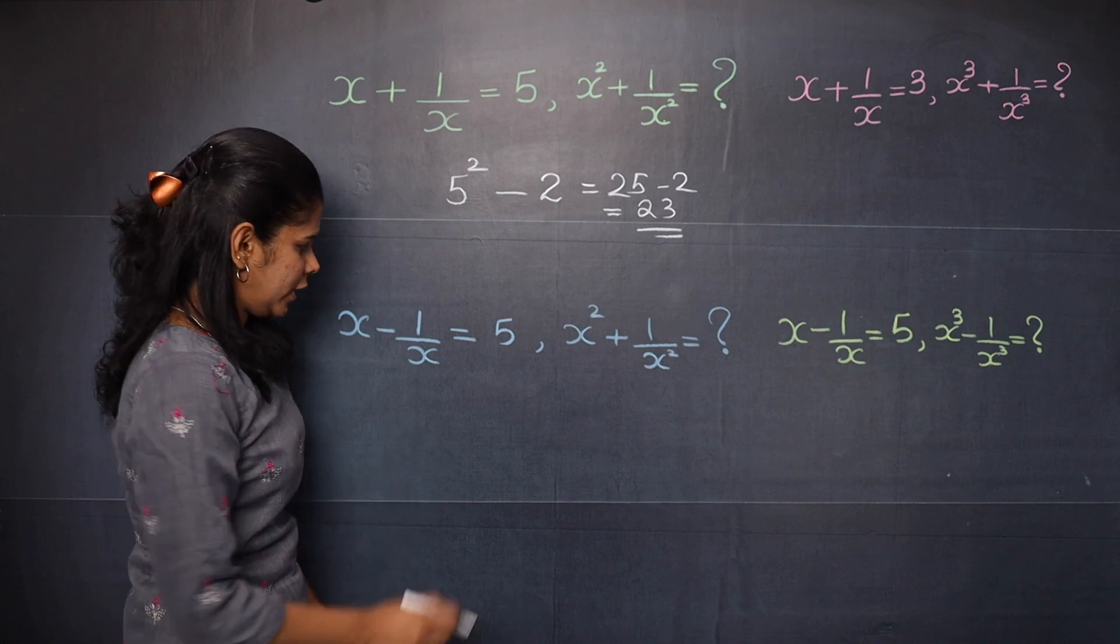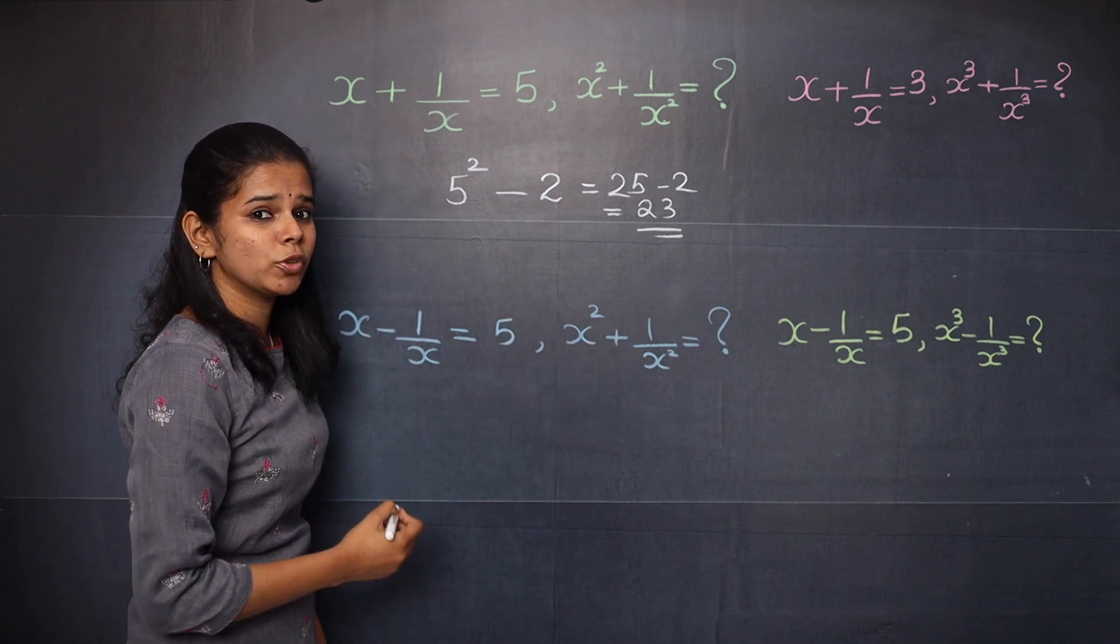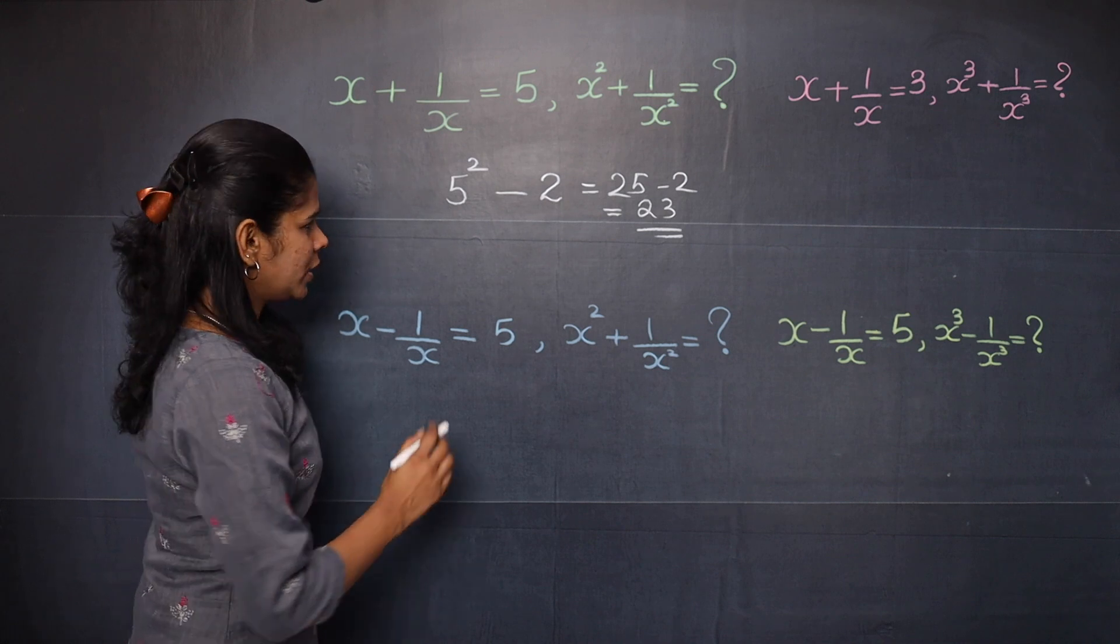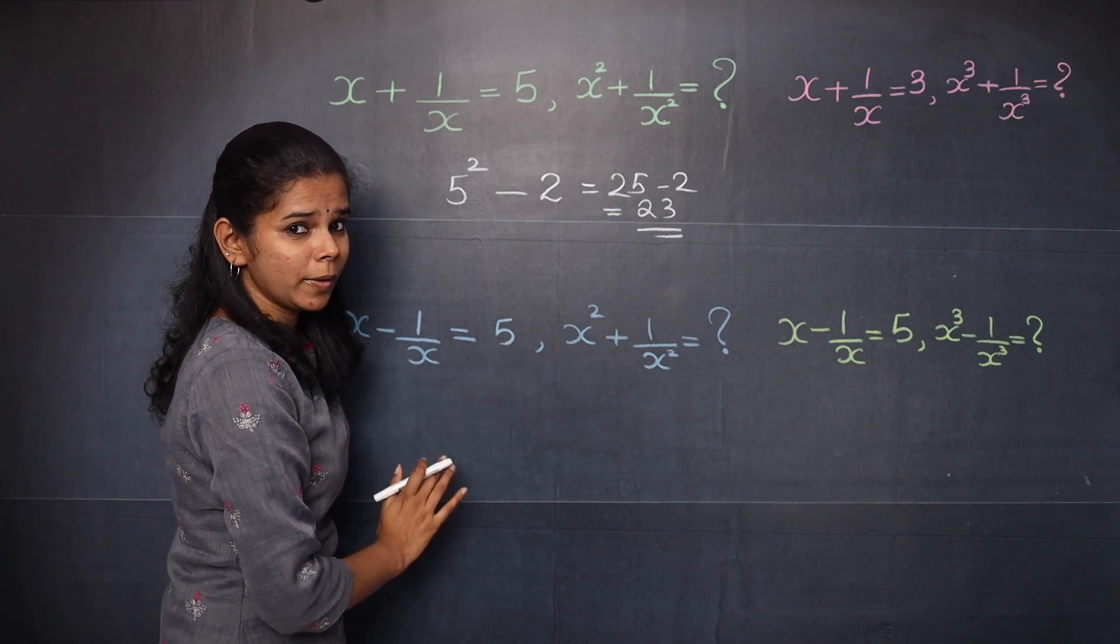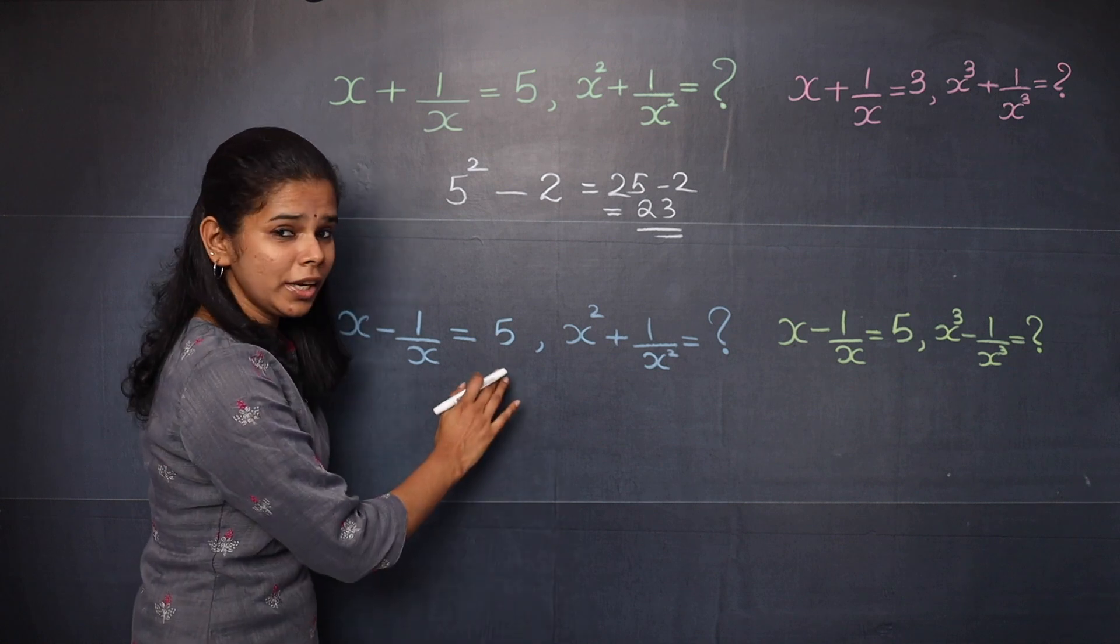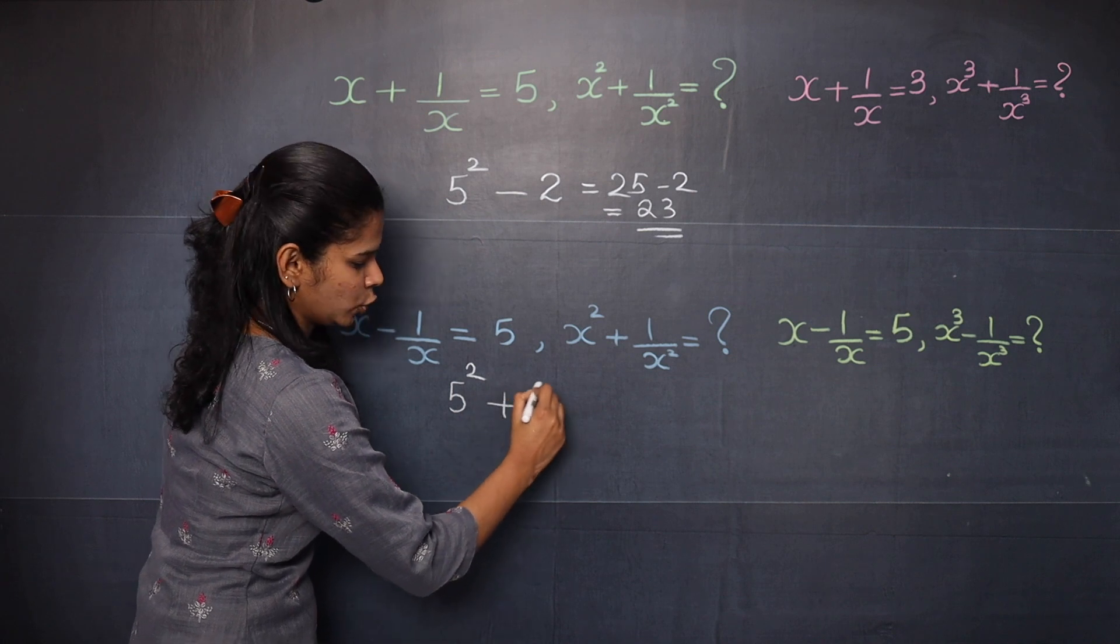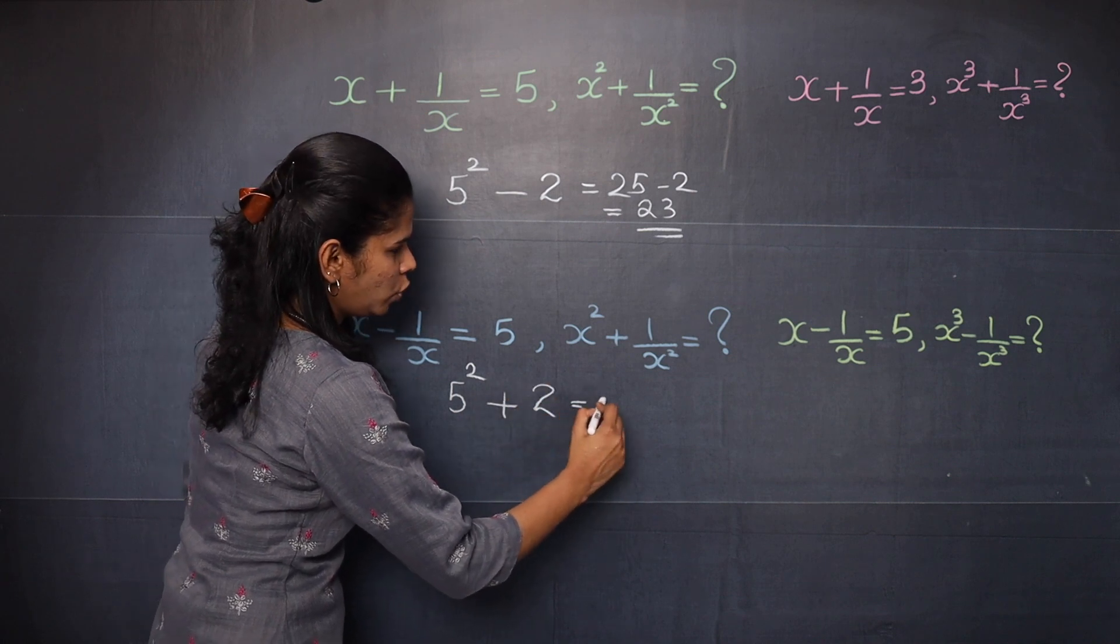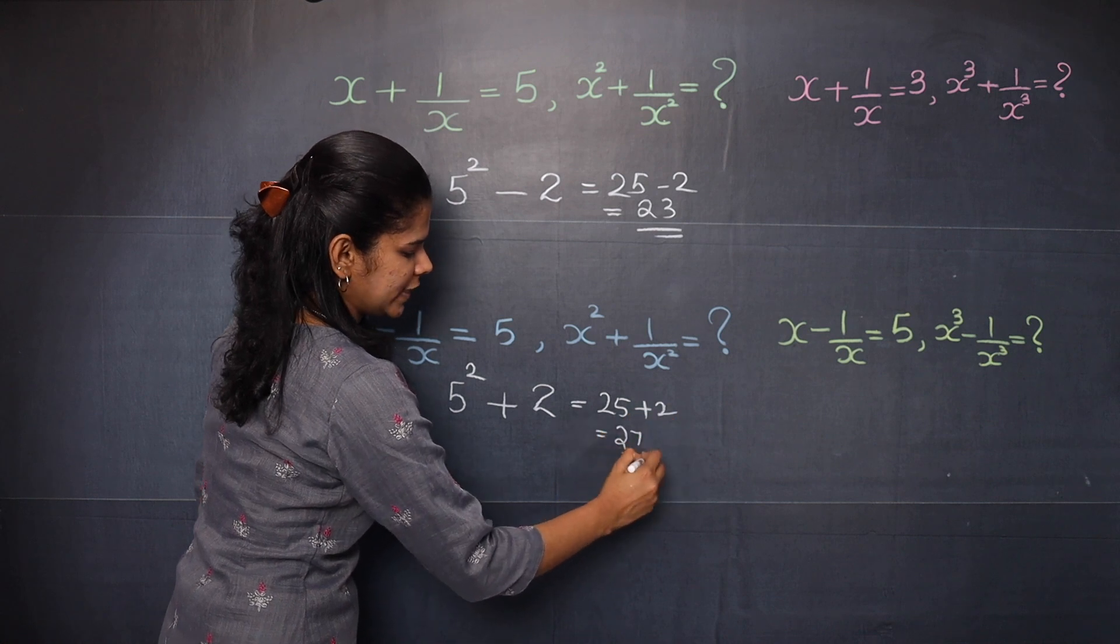Now in this question you have minus and plus, so in the answer you will have to apply plus. So here it is x square plus 1 by x square you need to find. So here you can write 5 square and then plus 2 equal to 25 plus 2 equal to 27.